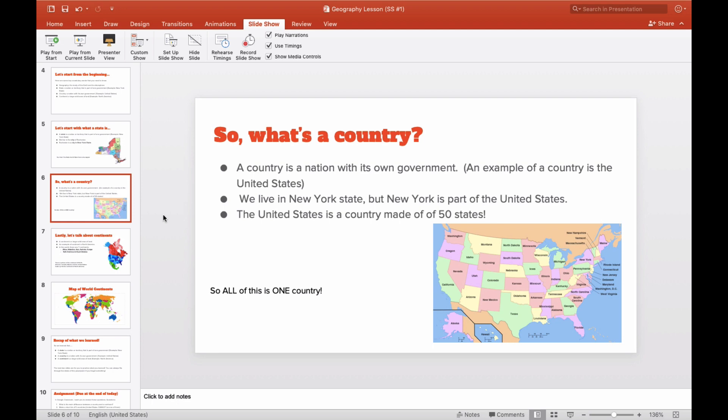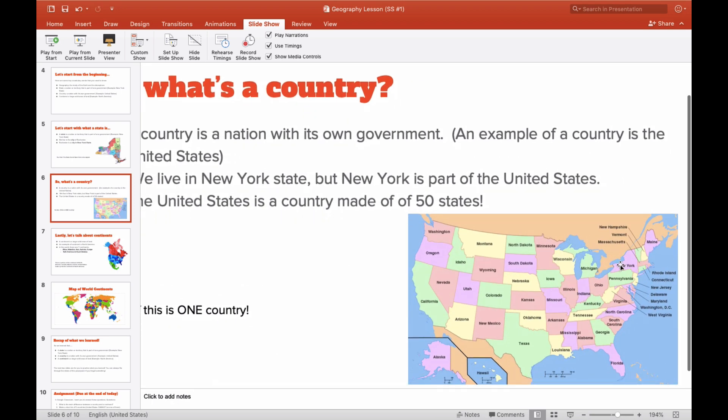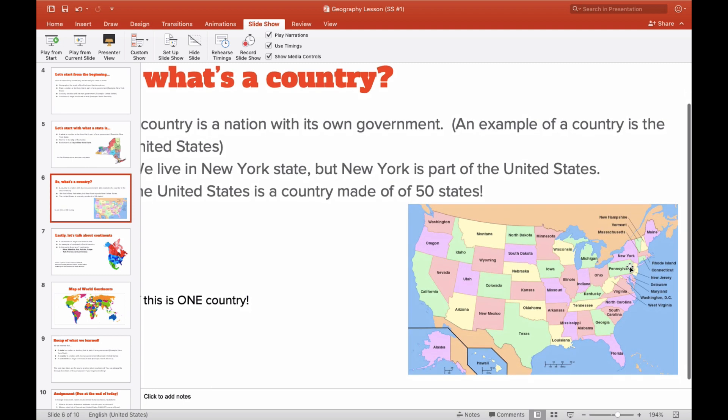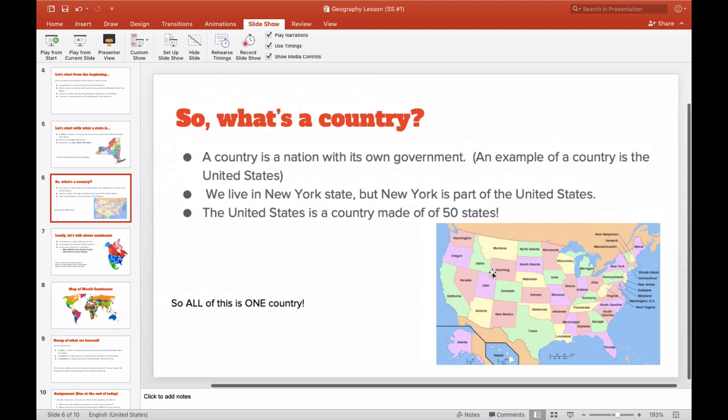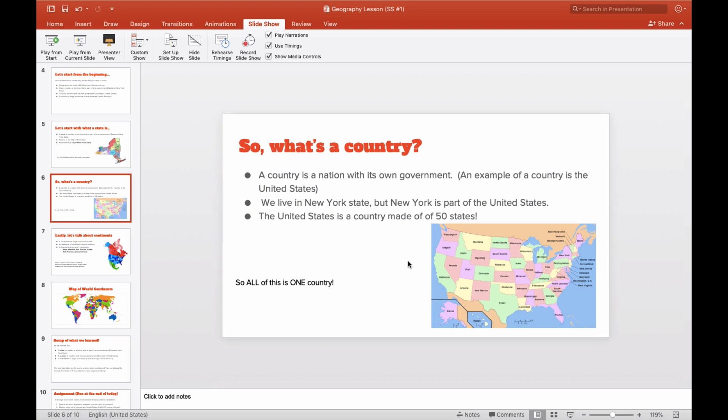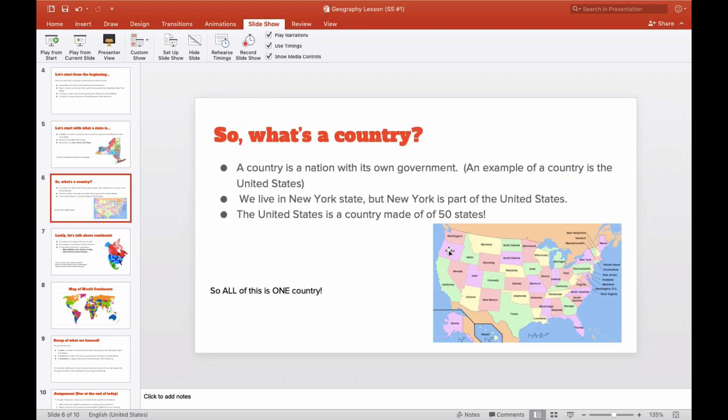So let's move on. What's a country? A country is a nation with its own government. For example, the United States. This map right here is a map of the United States. Every little colored piece right here, these are all states. So in total, there are 50. So we live in New York State. It's all the way up here. It says New York. But New York is part of the United States. So we are part of one country. And like I said, the United States is a country made up of 50 states.